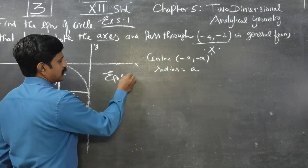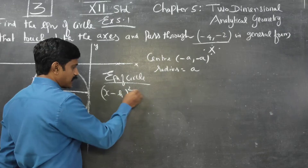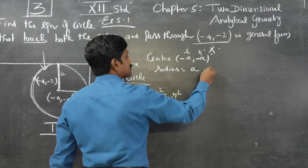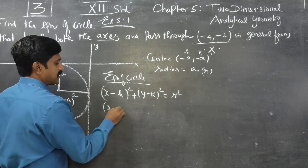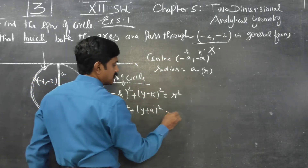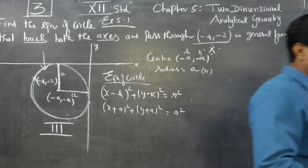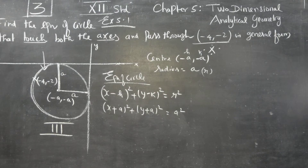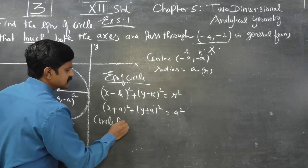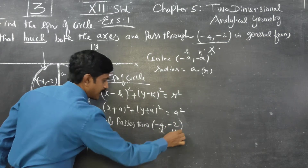What is the equation of a circle? Standard equation: x minus h all square plus y minus k all square is equal to r square. This is my h, this is my k, and this is my r. Therefore my equation will be x minus a all square plus y plus a all square is equal to a square. The circle passes through the point minus 4 comma minus 2, so we substitute that point.